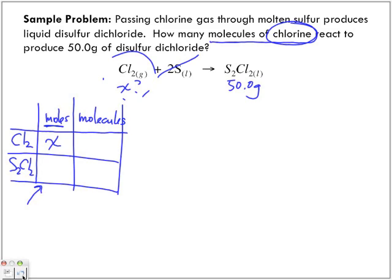How many molecules of chlorine? We have one molecule of chlorine to one molecule of disulfur dichloride. We're going to take the mass, 50.0 grams of sulfur, and divide that by the molar mass of sulfur, 135 grams per mole. Grams cancel out, and we are left with 0.370 moles of disulfur dichloride.